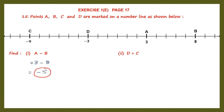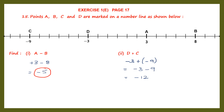Next, D plus C. D is minus 3 and C is minus 9. We have to add both: minus 3 plus minus 9. Opening the brackets, minus 3 — and with a plus before a bracket there's no change in sign — so that's minus 9. Signs are the same, so put the same sign and add: 3 plus 9 is 12. The answer is minus 12.